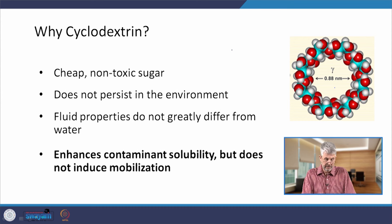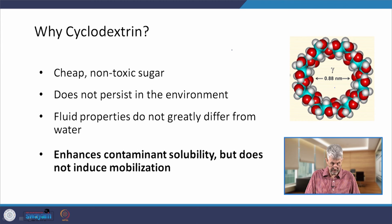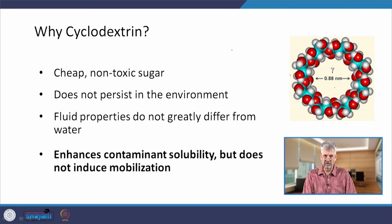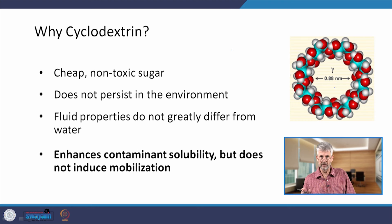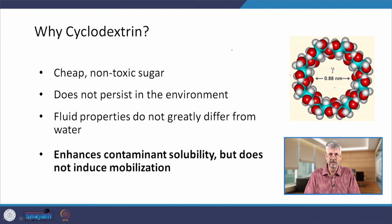Why cyclodextrin? It's a cheap, non-toxic sugar produced at industrial scale. Being a sugar, it does not persist in the environment like many surfactants or some types of alcohol that take a long time to break down. Cyclodextrin breaks down rather quickly — but not too quickly to lose its effectiveness during treatment — within a couple of weeks or months. Because cyclodextrin doesn't reduce the interfacial tension, its fluid properties are basically similar to those of water, so we don't have to worry about mobilization or about DNAPLs escaping into lower parts of the aquifer.